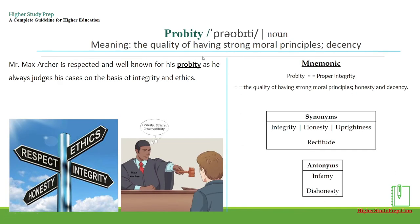The next word is probity, which is a noun, and it's similar to rectitude. It means the quality of having strong moral principles or decency. For example, Mr. Max Archer is respected and well-known for his probity, as he always judges his cases on the basis of integrity and ethics. The mnemonic: the word probity can be broken up as 'proper integrity,' that is, the quality of having strong moral principles, honesty, and decency. The synonyms are integrity, honesty, uprightness, and rectitude. Some antonyms could be infamy, dishonesty.